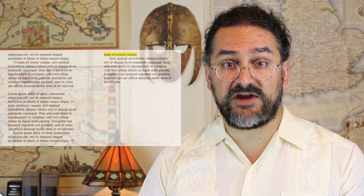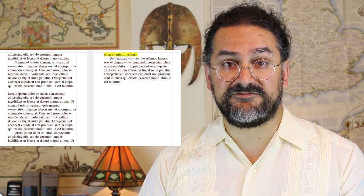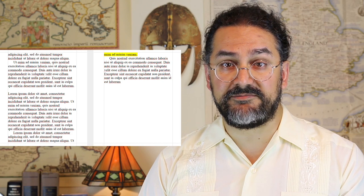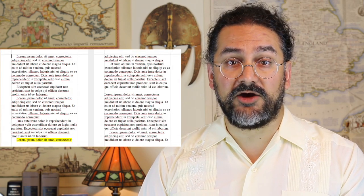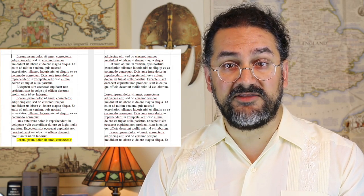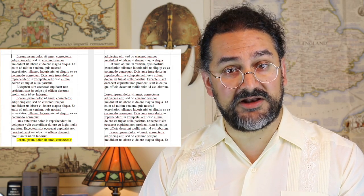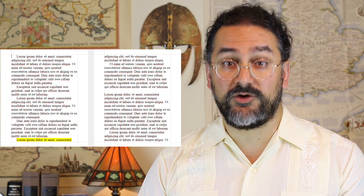Then there's the typesetting term widows and orphans, referring to a paragraph-ending line that falls at the beginning of a page — a widow — or a paragraph-opening line that appears at the bottom of a page — an orphan. Typesetters usually try to avoid widows and orphans as they look messy and break up the flow of the text.